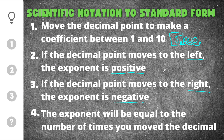Numbers written in scientific notation have two parts: a coefficient that is being multiplied times a power of 10, written as 10 to an exponent. This coefficient always has to be in between 1 and 10, which is why we move the decimal point to make a number in between 1 and 10.